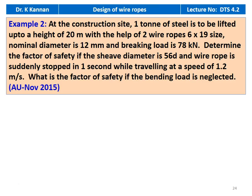Example number 2, from the November 2015 question paper. At a construction site, one ton of steel is to be lifted up to a height of 20 meters with the help of two wire ropes of 6 by 19 size. The nominal diameter is 12 millimeter and breaking load is 78 kilonewton. Determine the factor of safety if the sheave diameter is 56 times the wire diameter of the rope, and the wire rope is suddenly stopped in one second while traveling at a speed of 1.2 meters per second. What is the factor of safety if the bending load is neglected?